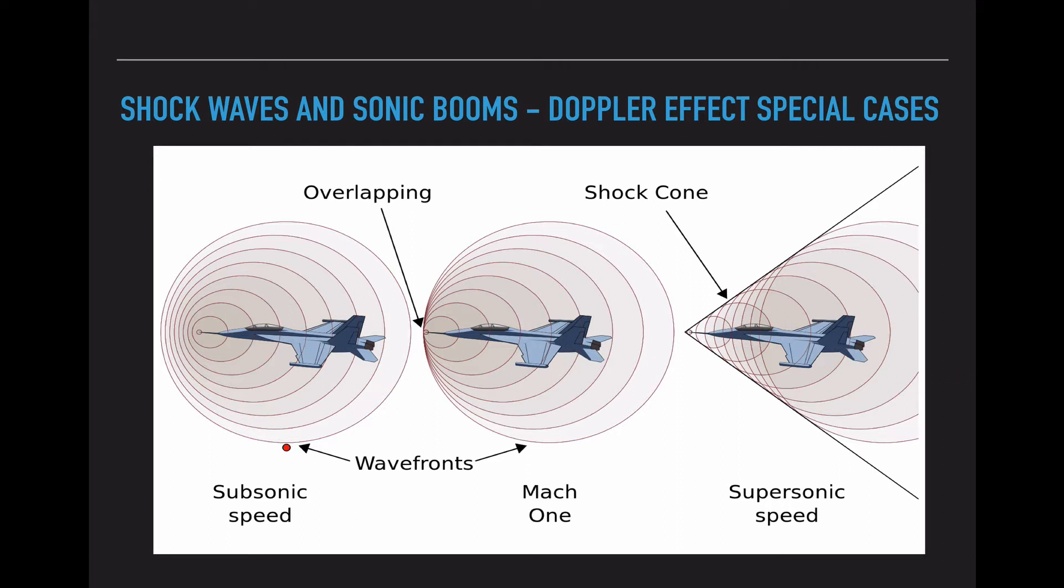This first diagram shows us a plane or a jet moving at subsonic speeds, meaning it's moving slower than the speed of sound. And we have these crests getting built up in the very beginning, so we hear a very high pitched noise. And we have these stretched out crests at the end, which means behind us we would hear a low pitched noise.